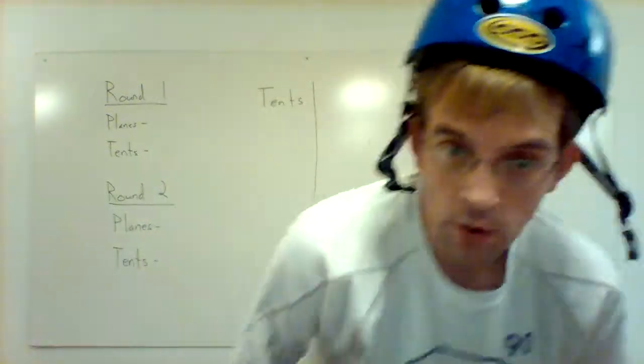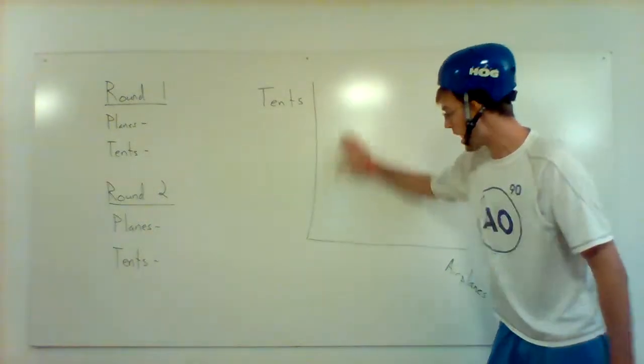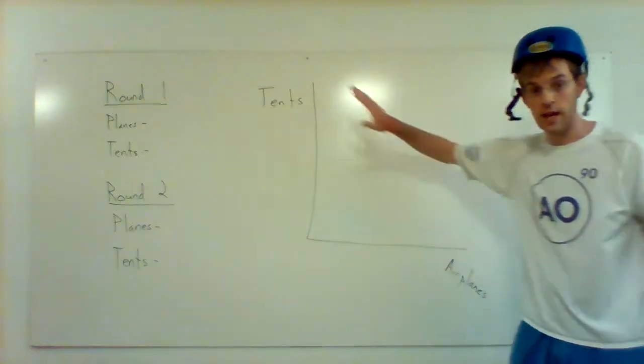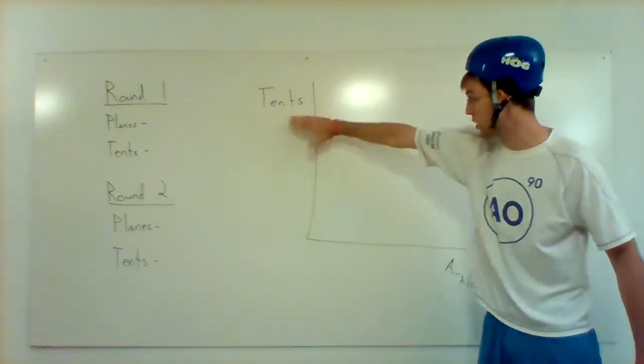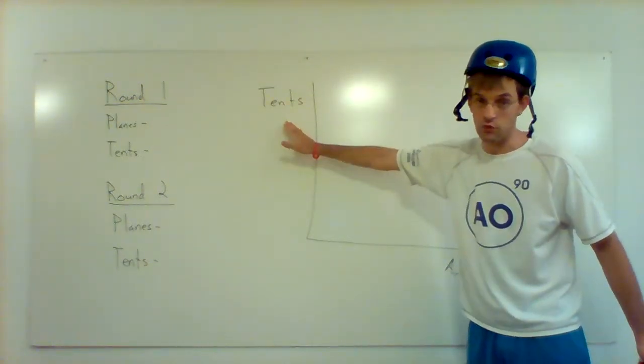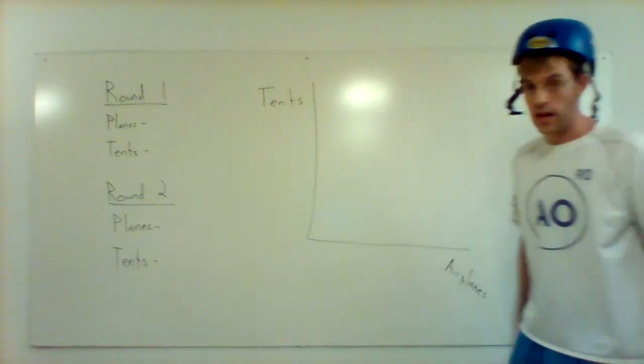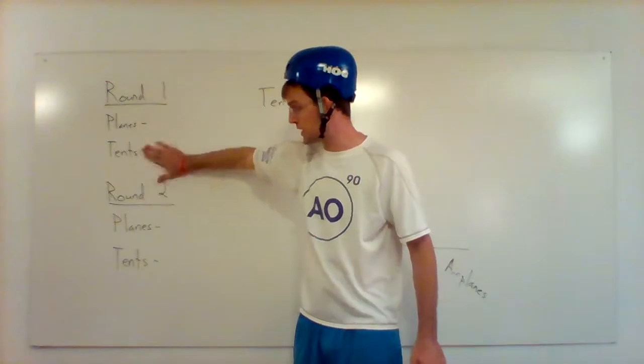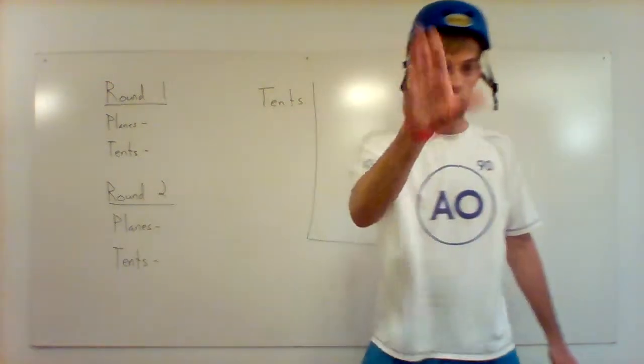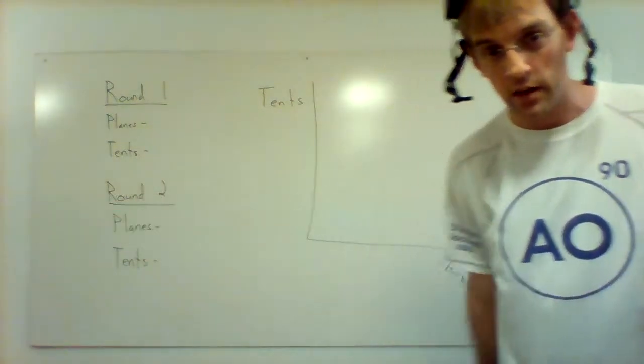Pause the video, go do that. I'll wait. Okay, I'm done waiting. So what I want you to do on one of those sheets of paper, I want you to make a little graph like so. I want you to put tents on the vertical axis here, the Y. It doesn't really matter, but you can put that in there and you can put airplanes here. And I also want you to write round one planes tents, round two planes tents. Put that on one sheet of paper, put it off to the side.